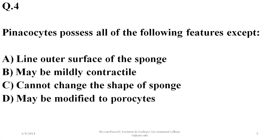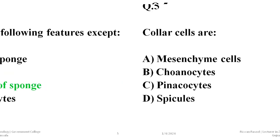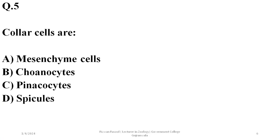Question three: pinacocytes possess all of the following features except — pinacocytes do line the outer surface of the sponge, they may be mildly contractile, and they may be modified to form porocyte cells. However, the statement that they cannot change the shape of the sponge is wrong, because pinacocytes can play a role in changing the shape of the sponge.